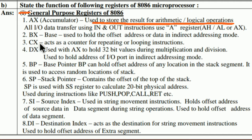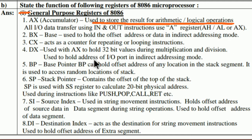The third register is CX, which acts as a counter for repeating or looping instructions. The fourth is DX, used with AX to hold 32-bit values during multiplication and division. It is also used to hold the address of an input-output port in indirect addressing mode.